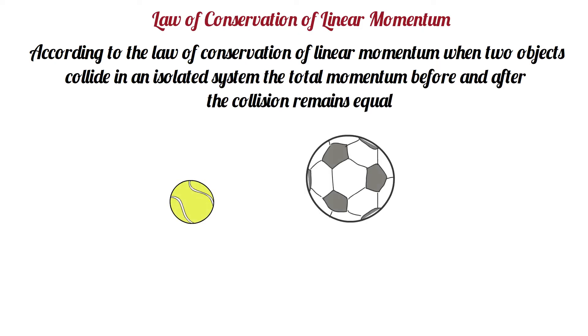Consider two balls of mass M1 and M2, where the ball of mass M1 has a velocity of U1, and the ball of mass M2 has a velocity of U2.